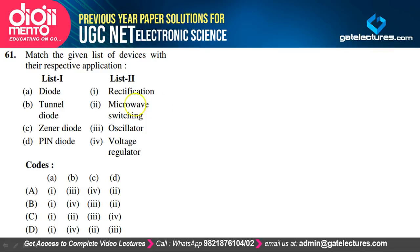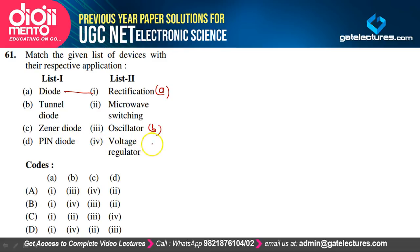Match devices with applications: Diode → rectification (A-1); Tunnel diode → microwave oscillator (B-2 or 3); Zener diode → voltage regulator (C-4); PIN diode → microwave switch (D-3). Option A satisfies our explanation.